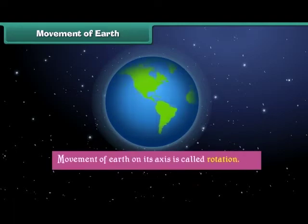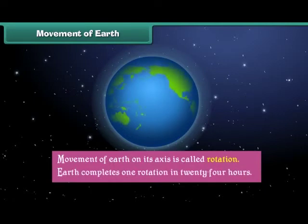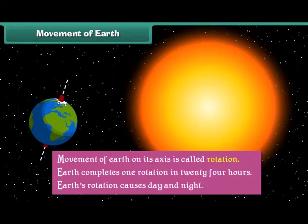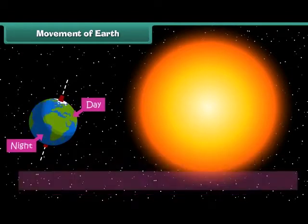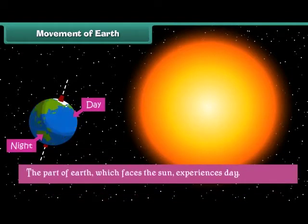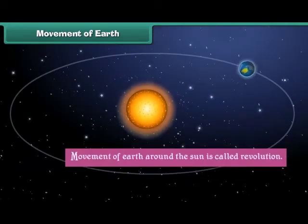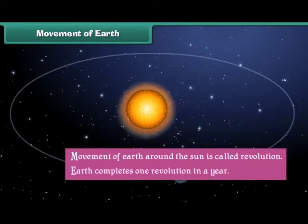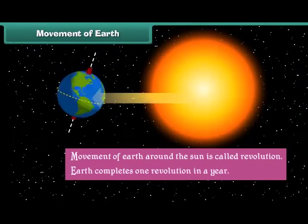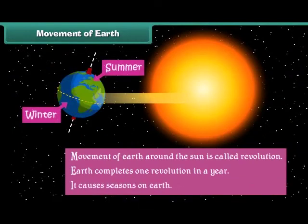Earth shows two types of movement. Movement of Earth on its axis is called rotation. Earth completes one rotation in 24 hours, and Earth's rotation causes day and night — the part of Earth which faces away from the Sun experiences night. Movement of Earth around the Sun is called revolution. Earth completes one revolution in a year, and it causes seasons on Earth.